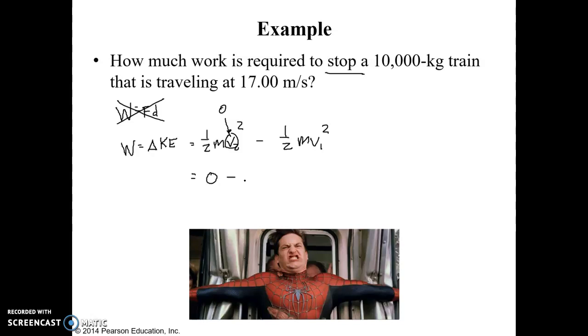And then we're going to subtract from that 1 half the mass of our train is 10,000 kilograms, and its initial velocity was 17 meters per second.